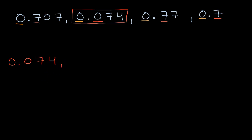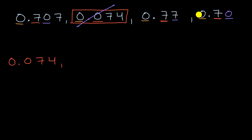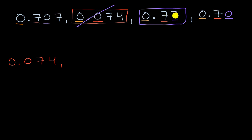Now let's move to the hundredths place. The first number has zero hundredths. We've already placed the second number. The third number has seven hundredths. The fourth number — it might not be obvious — but the hundredths place can be viewed as zero. So these three remaining numbers have the same ones and tenths, but 0.77 has seven hundredths while the other two had zero hundredths. So 0.77 is the largest of our four numbers — it doesn't matter what's happening in the thousandths place or beyond.